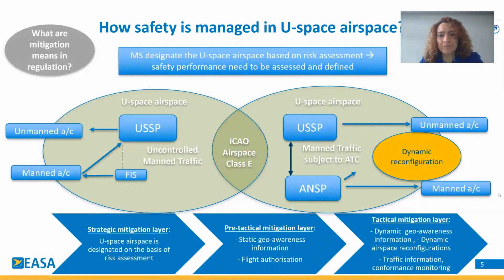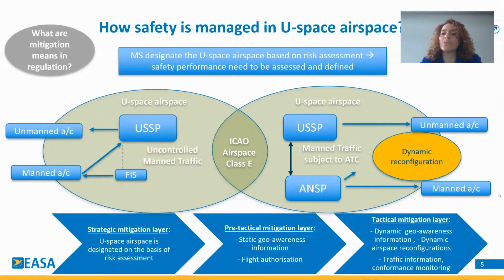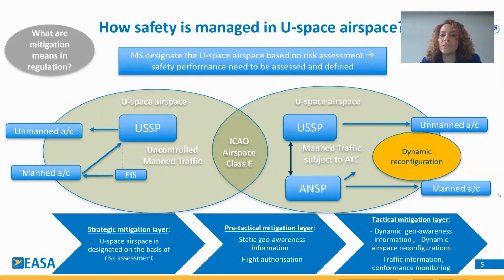As you can see on the right-hand side, when U-Space airspace is implemented in controlled airspace, we have the ANSP who has been designated for that controlled airspace providing air traffic services to manned aircraft as always. The USP provides U-Space services to unmanned aircraft in the same volume of airspace.